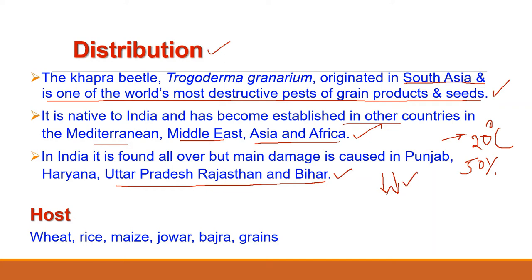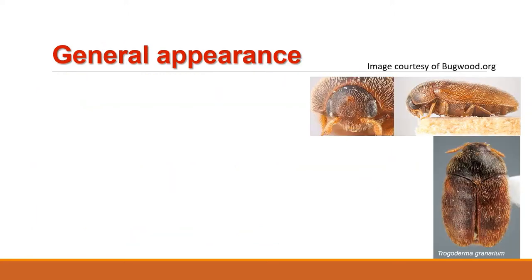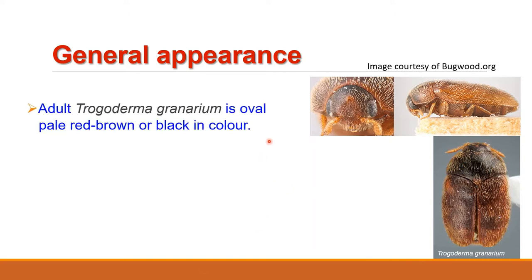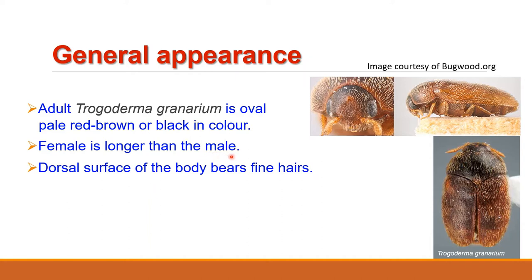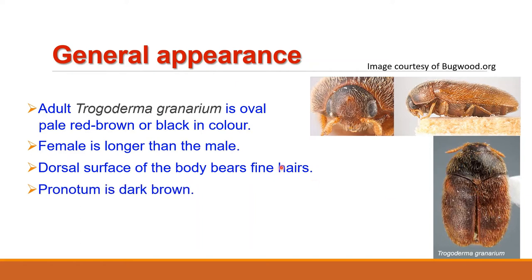Regarding the host, it prefers wheat but also feeds on rice, maize, jowar, bajra, and other grains. As far as its general appearance is concerned, adult Trogoderma granarium are oval, pale, red-brown or black colored with distinct markings on the wing covers. Females are about 2.5 mm in length and males are about half the size of the female, so the female is longer than the male.